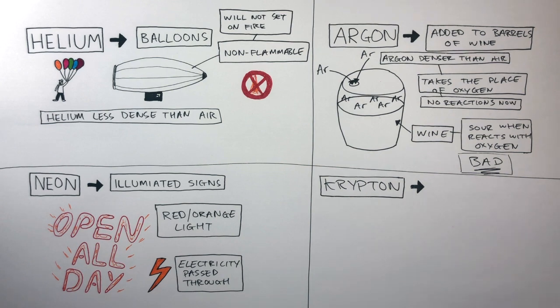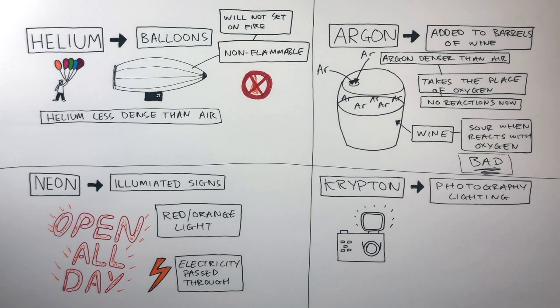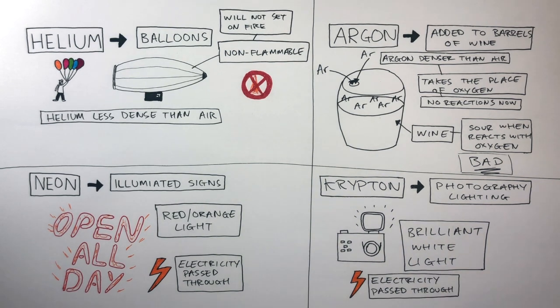Krypton is the fourth element in Group Zero, and is used in photography lighting. When the light of a camera flashes brilliant white light, this is due to electricity passing through the krypton.